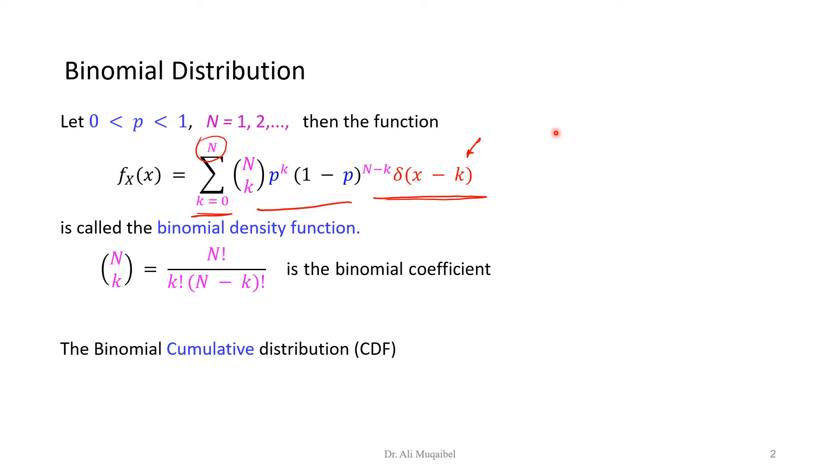The binomial CDF, the cumulative distribution, the one at the top here is the PDF. So we can get the CDF by simply changing the delta into unit step function, because the CDF and the PDF are related by integration. So we've got the following expressions. This is almost the same, except u of t becomes the integral of delta, and now we have capital F of x. So now we have the binomial density and the binomial CDF.